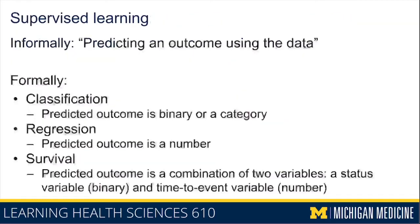Supervised learning is the most common form of machine learning you come across, especially in healthcare, and it really involves predicting an outcome using data. Within this broad objective, it breaks down into more granular objectives. The first is classification, where the outcome you're trying to predict is binary or categorical with multiple categories. There is also regression in supervised learning, which refers to predicting a numeric outcome — note this is a very different use of the word 'regression' than in epidemiology or statistical modeling, where it refers to linear or logistic regression.